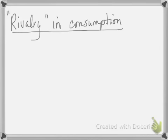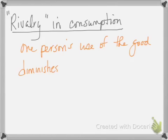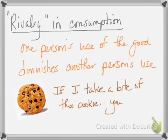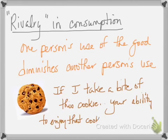Rivalry — a lot of times you'll hear economists say 'rivalry in consumption.' That means that one person's use of the good diminishes another person's use. For example, if we have a delicious chocolate chip cookie and I take a bite, your ability to enjoy that cookie is reduced. You wouldn't want to eat a cookie I've already bitten, so a cookie is an example of a good that has rivalry in consumption.